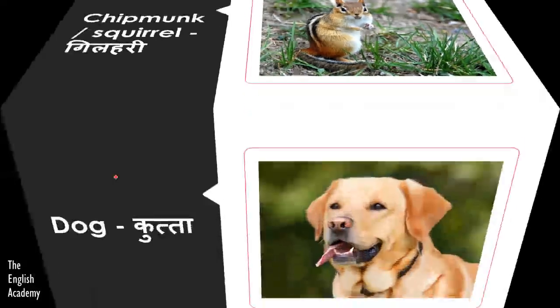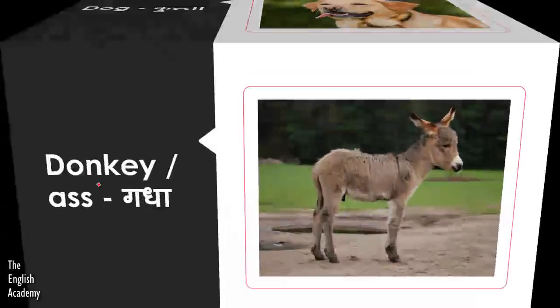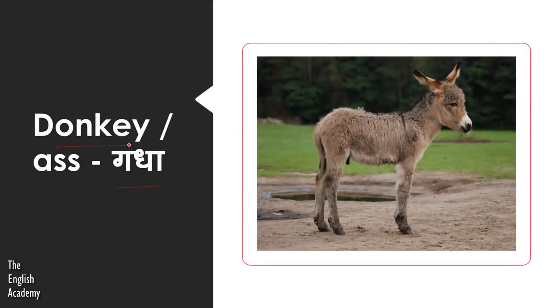The next animal is Dog, which we know as Kutta. Then we have Gadha, which is called Donkey or Ass.